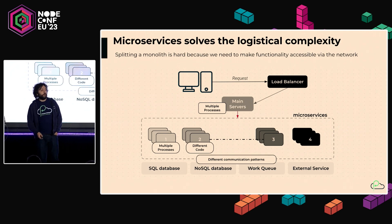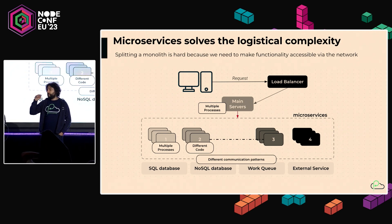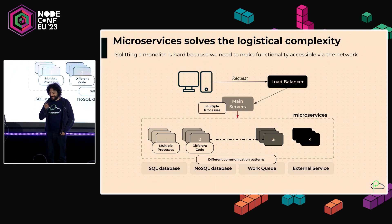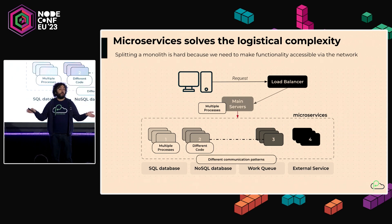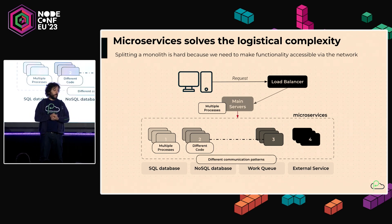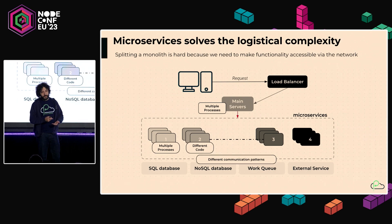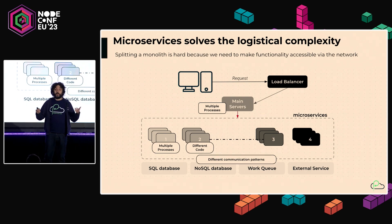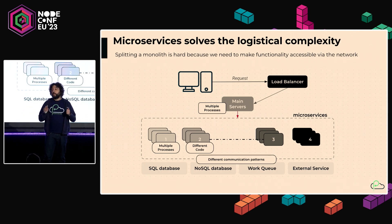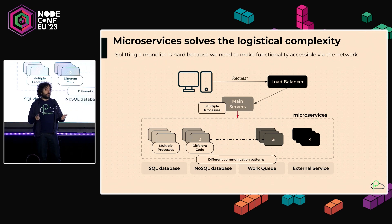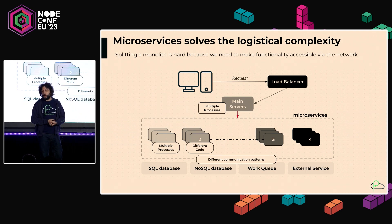So if you are writing monoliths and you love monoliths, you know that the solution is called microservices. Microservices is a fantastic thing to solve the logistical complexity of building software as a team — with a lot of people and a lot of money to burn. You can go very fast because you can have as many teams as you want, but it costs a lot of money.